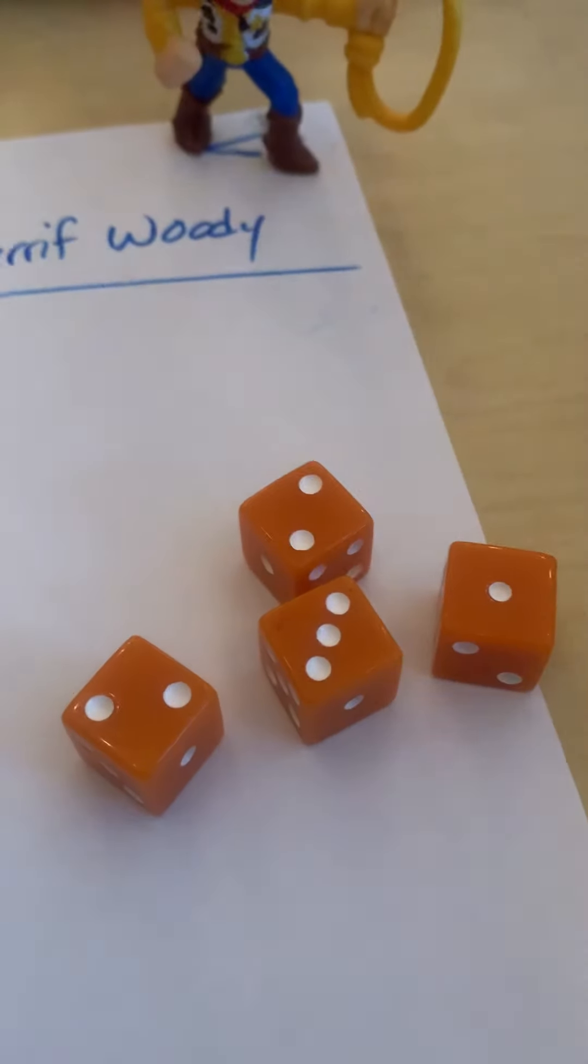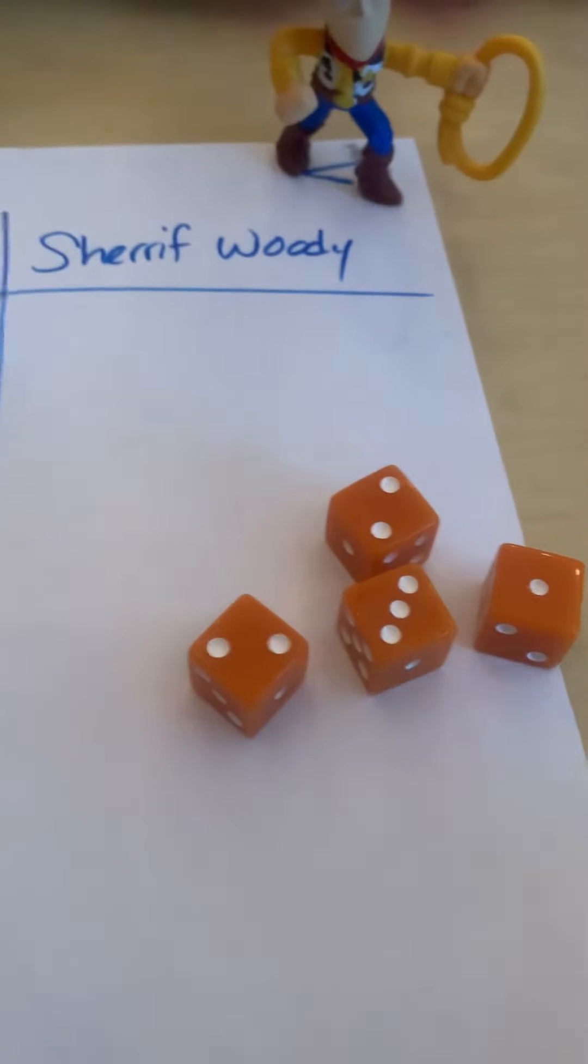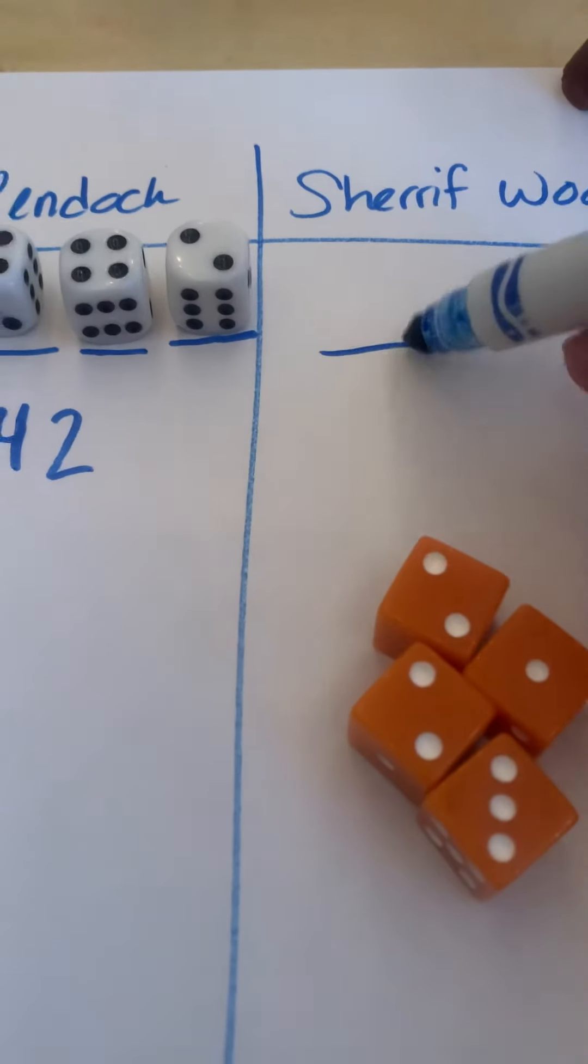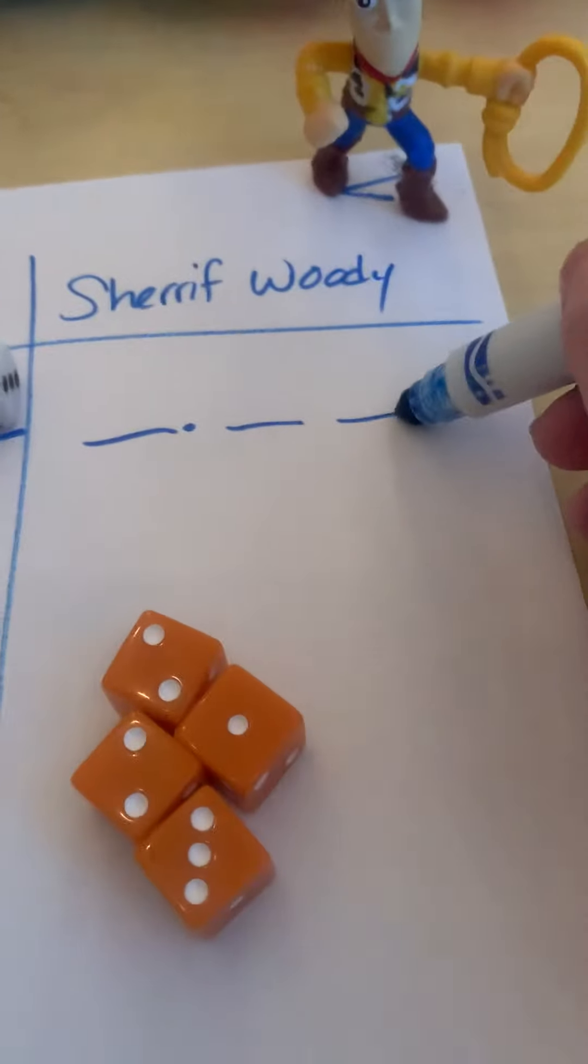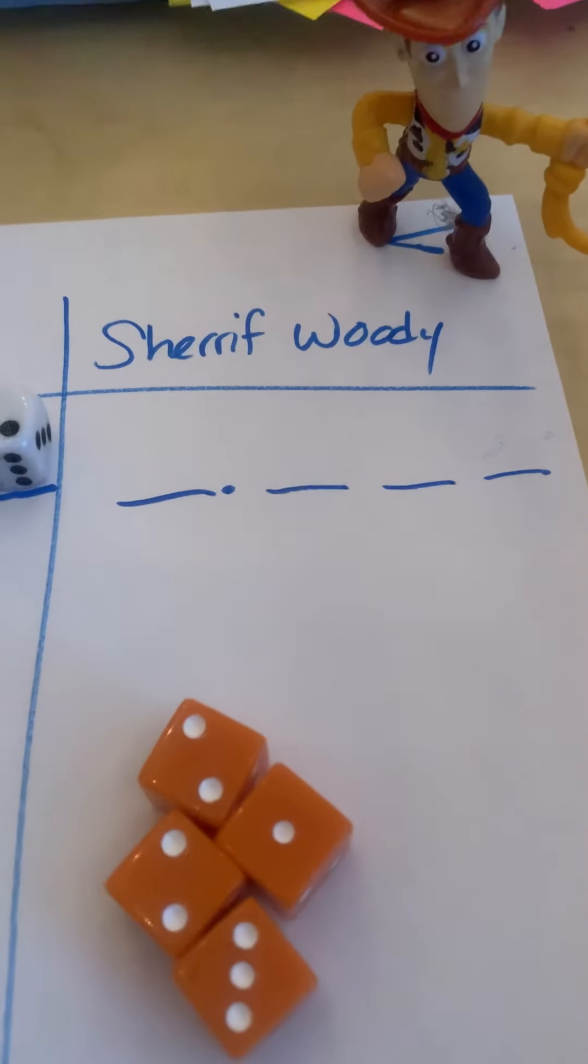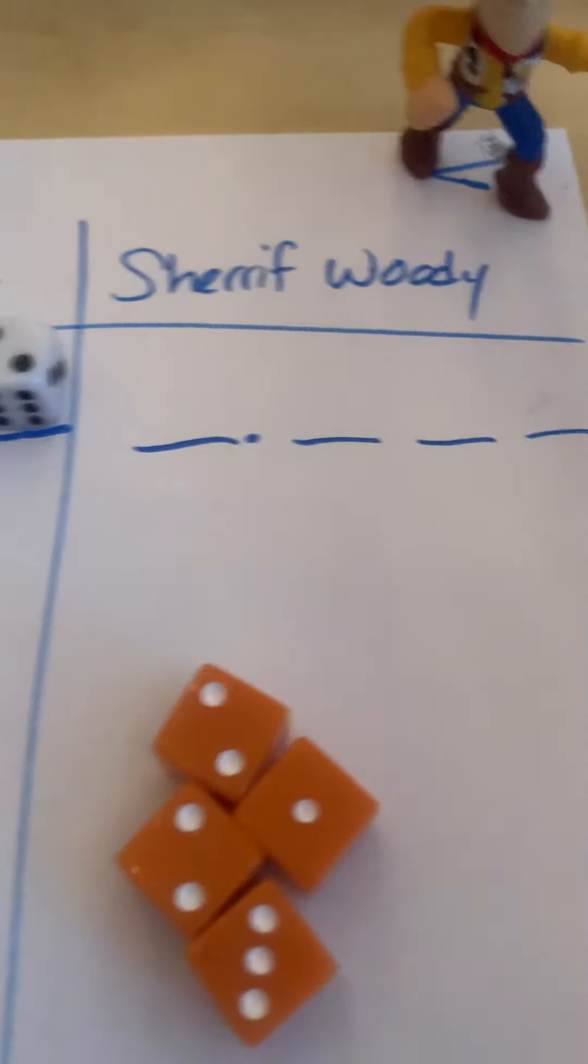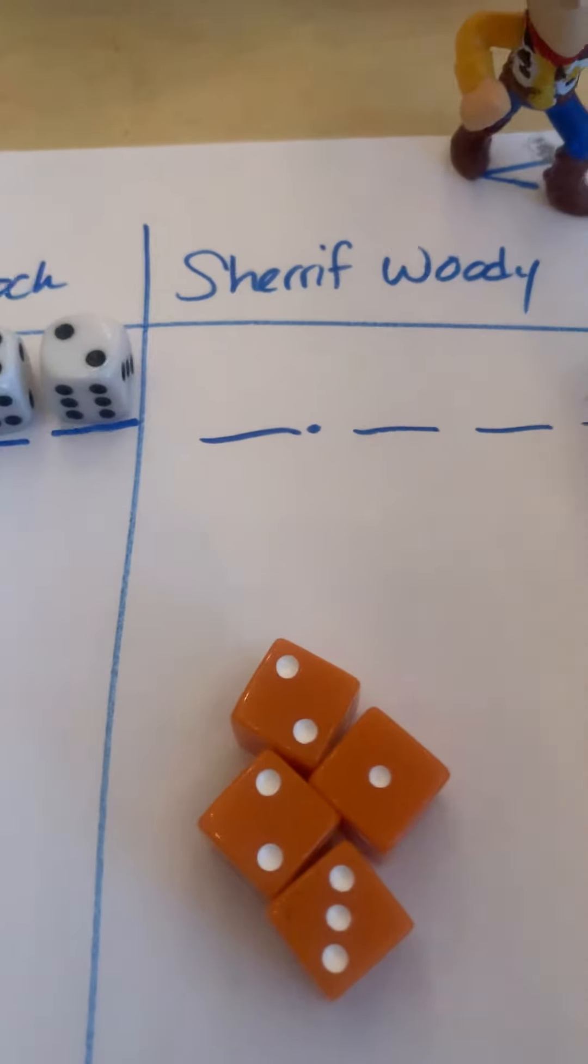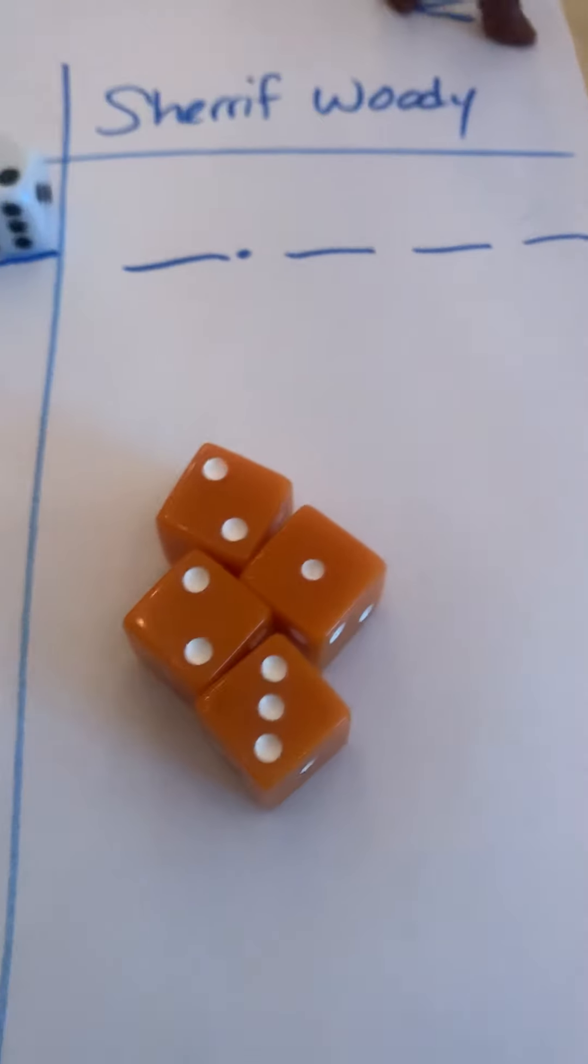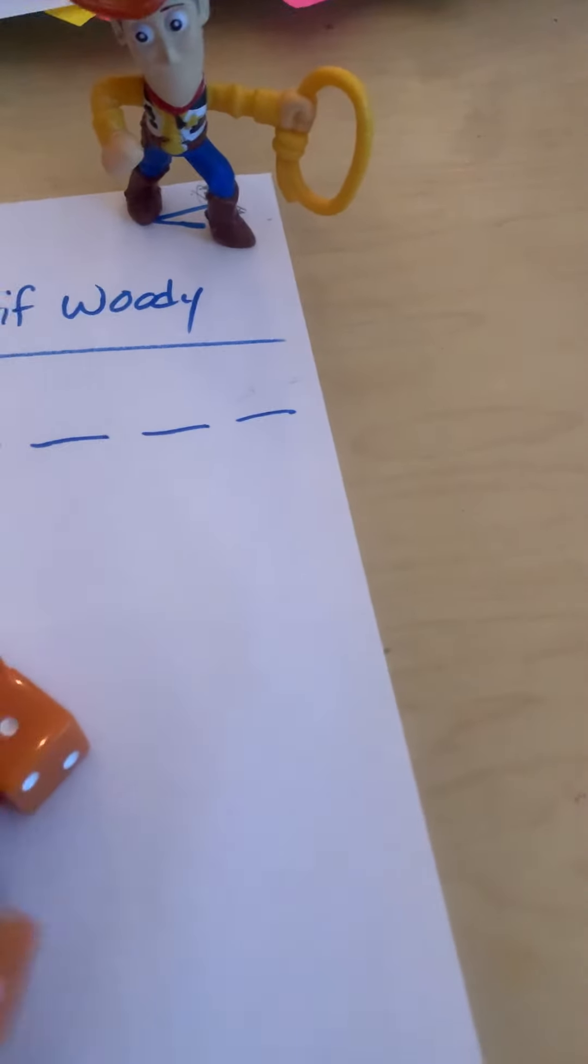Uh-oh, I don't think Sheriff Woody's going to like this roll very much. Those are much smaller numbers, but let's see what I can do with them. So I'm going to create the same template for the numbers—a whole number and three decimal places. Now the biggest whole number I have here is the three.